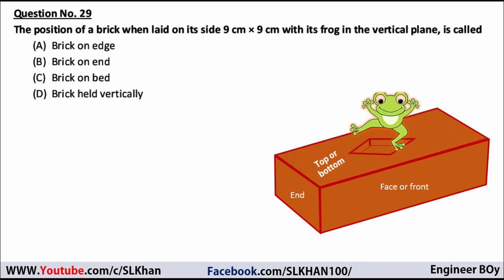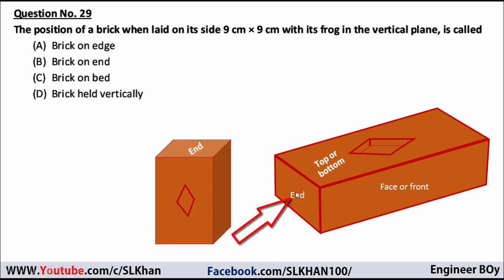Just look at this diagram. We have a brick with a frog. This is the end, this is the top, and this is the face or front. The question says the brick is laid on its 9×9 cm face, meaning we lay it on the ends — one end at the top and one at the bottom, with the frog in the vertical plane. As you can see in the figure, the brick is laid on its ends. So option B — brick on end — is the correct answer.